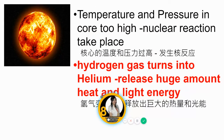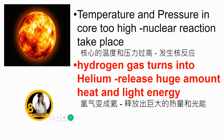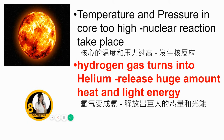When the temperature and pressure in the core become too high, a nuclear reaction takes place. Hydrogen gas turns into helium, releasing a huge amount of heat and light energy. Remember: hydrogen gas turns into helium and releases a huge amount of heat and light energy.